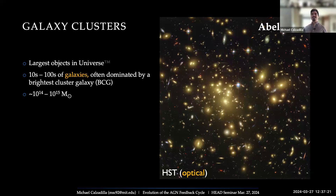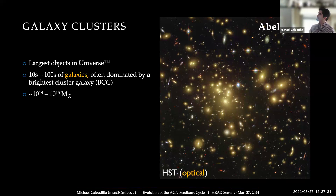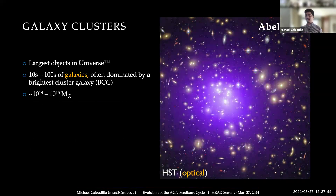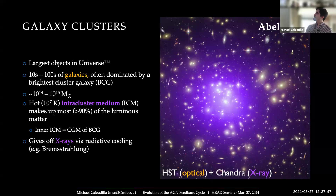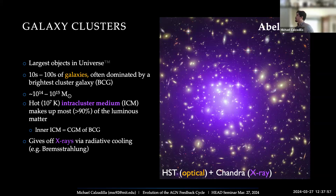I've focused on the largest galaxies and scales, the realm of galaxy clusters. They're the largest objects in the universe, containing tons of galaxies, but often dominated by a central bright cluster galaxy, or BCG. Galaxy clusters are incredibly massive, but most of the mass is not inside the galaxies per se, but in the space between them — the intracluster medium, or ICM. The inner parts of the ICM can be thought of as the CGM of that central BCG.